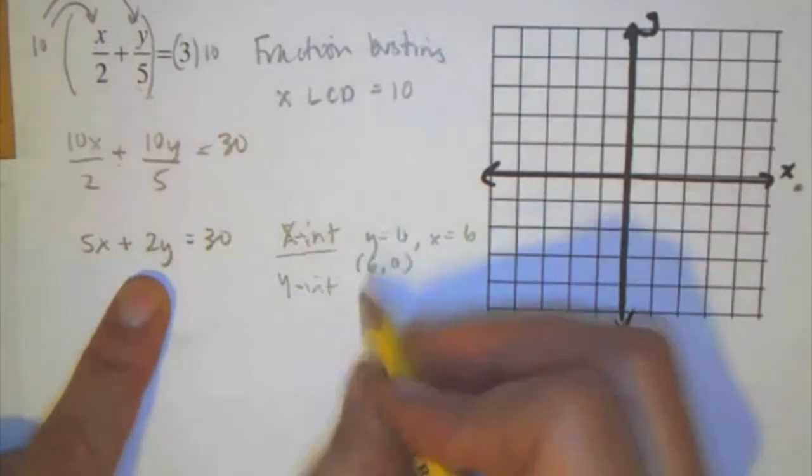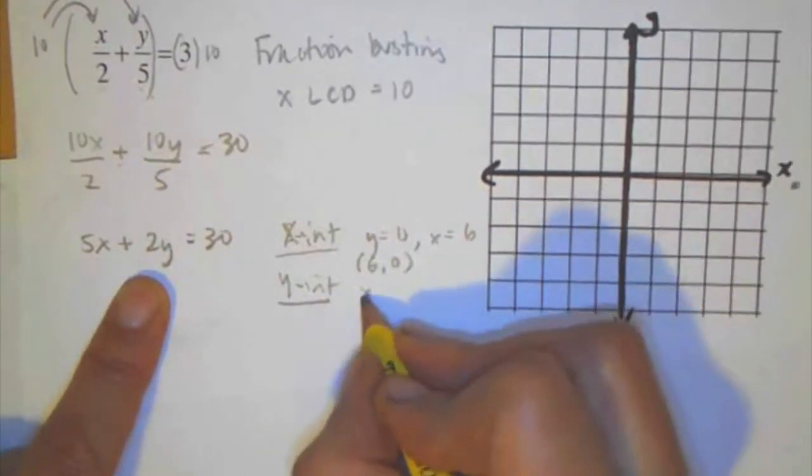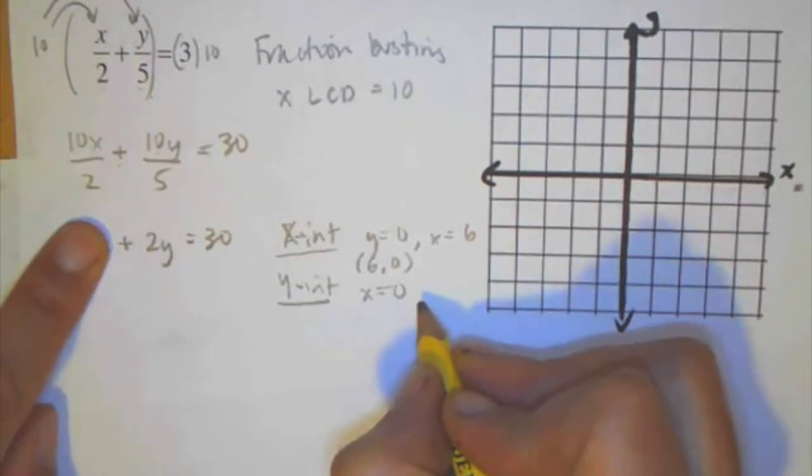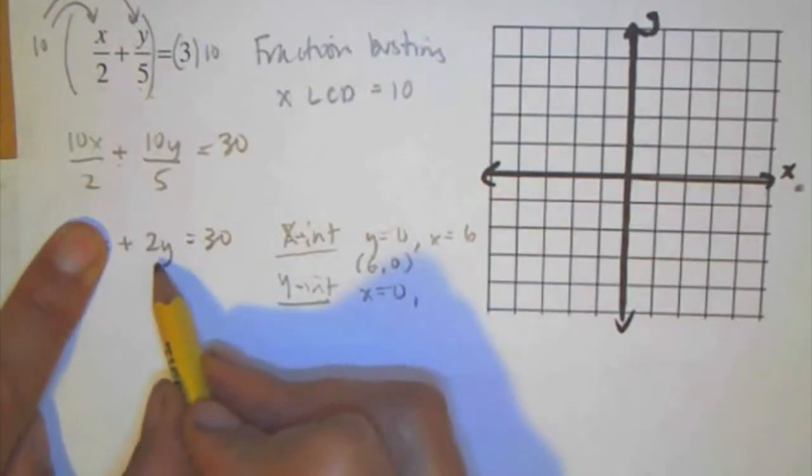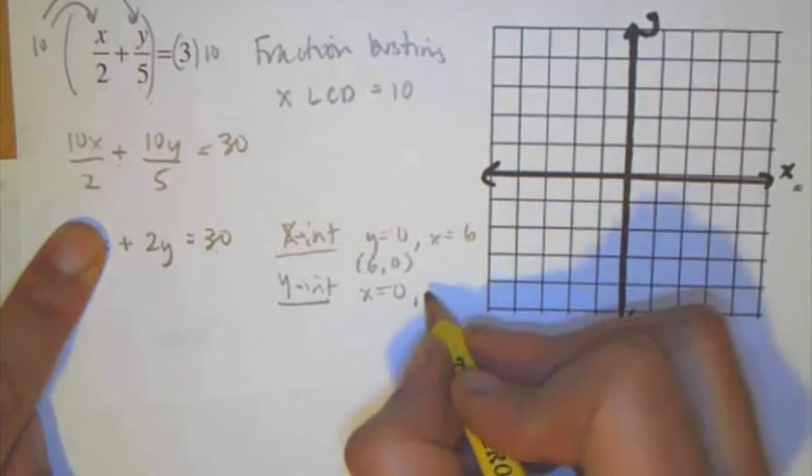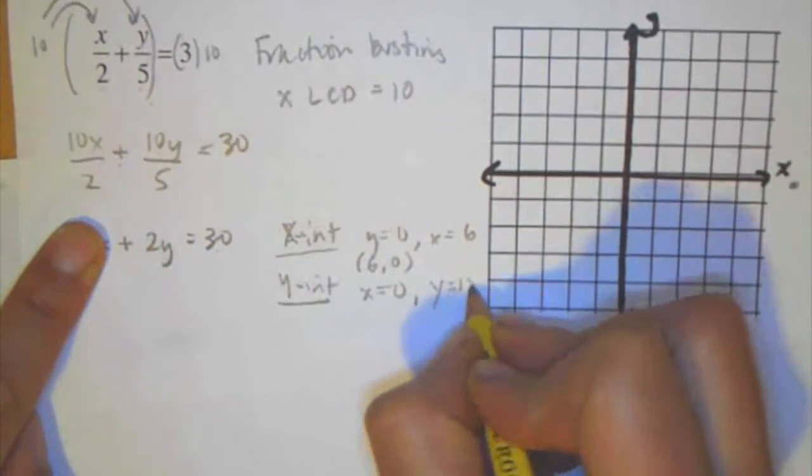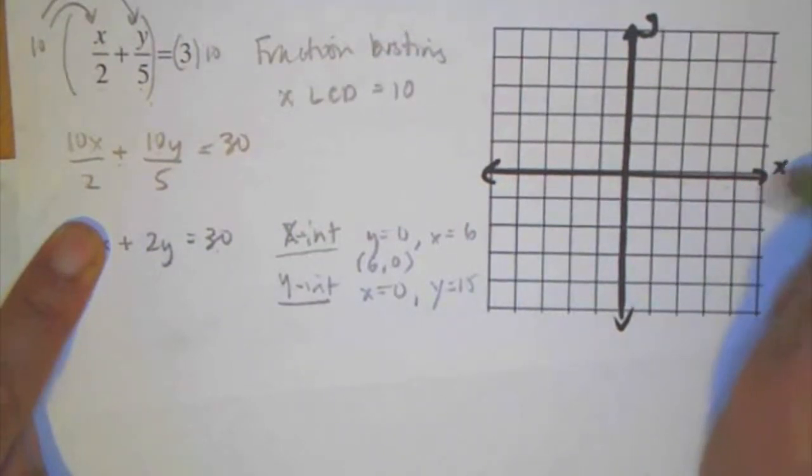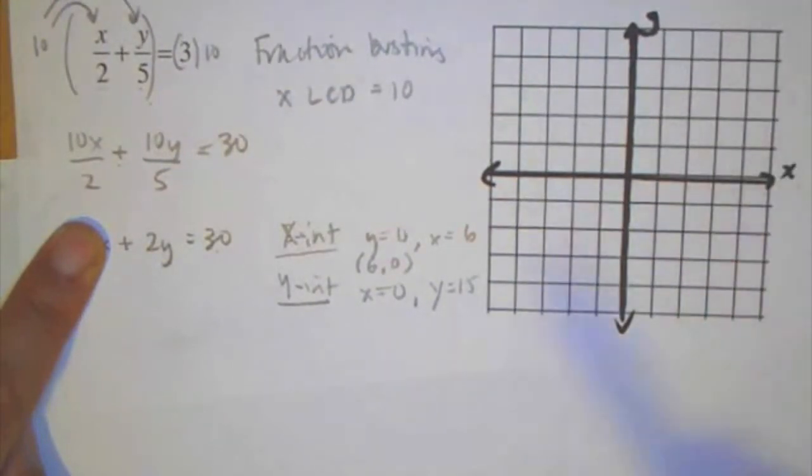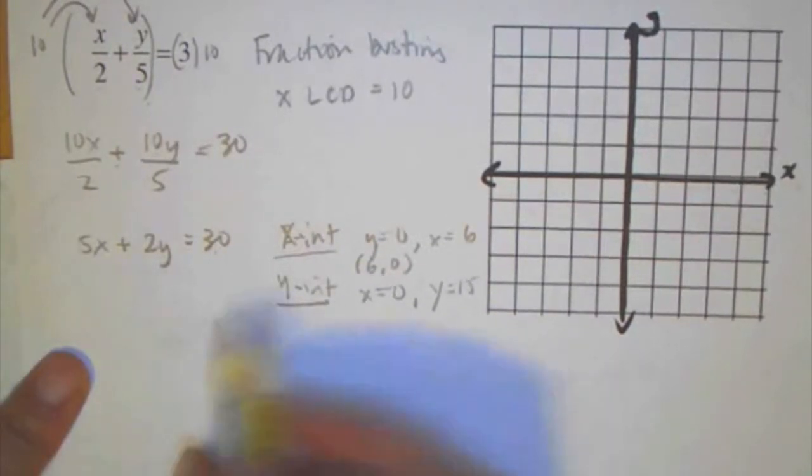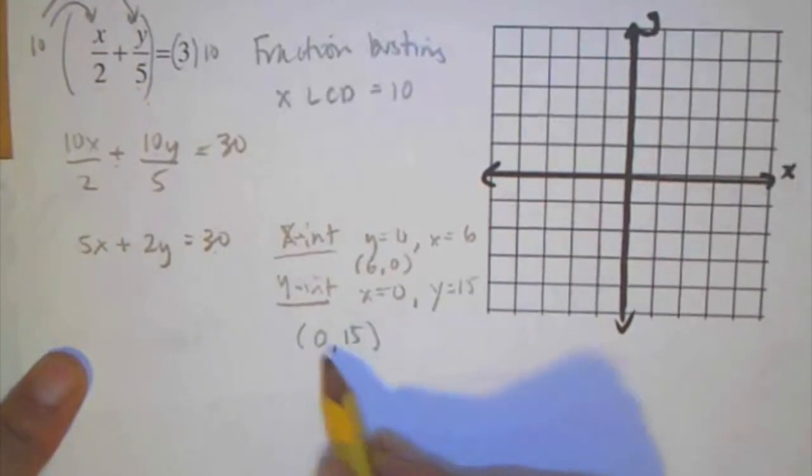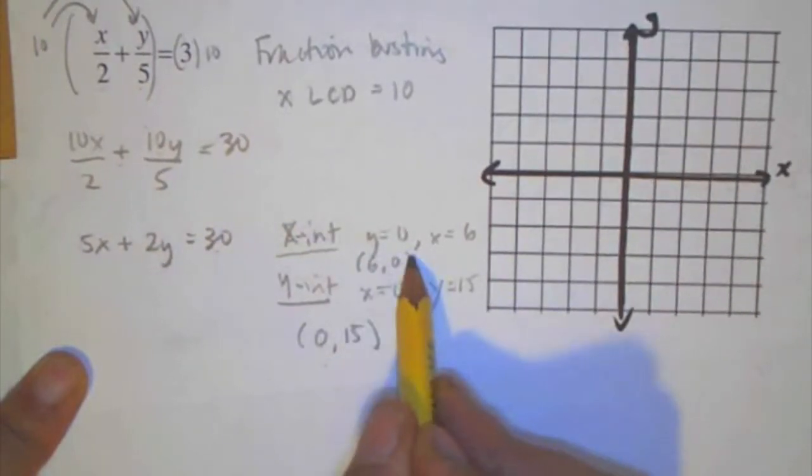To find the y-intercept, set x equal to 0. When I set x equal to 0, I can use this cover-up method. So 2 times what gives me 30? That's y equals 15. I did not scale. I have to rescale this in order for me to get this on here. Maybe we won't graph this one. That's fine because we're running out of time. So now I have this point, 0, 15. Once again, I have two points so I can easily graph it from here.